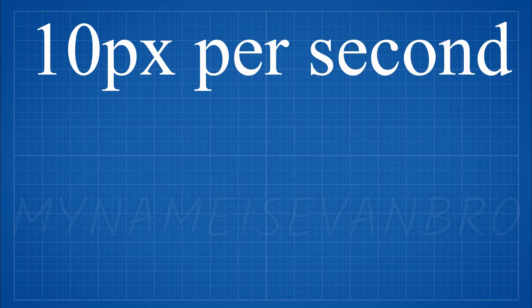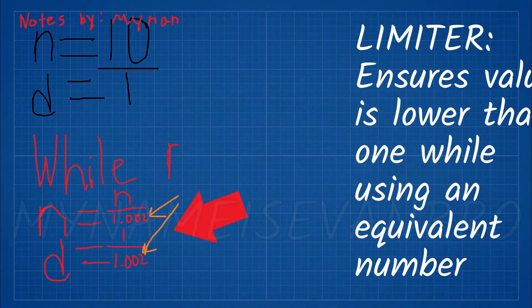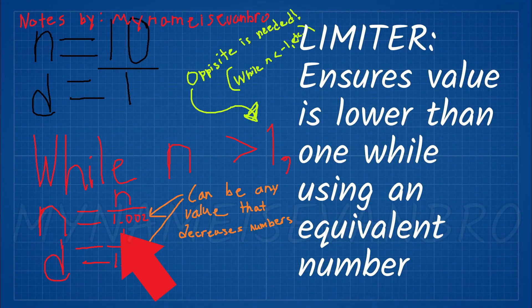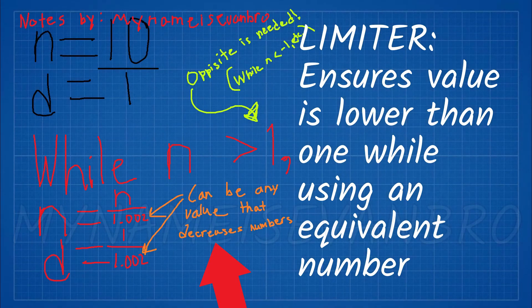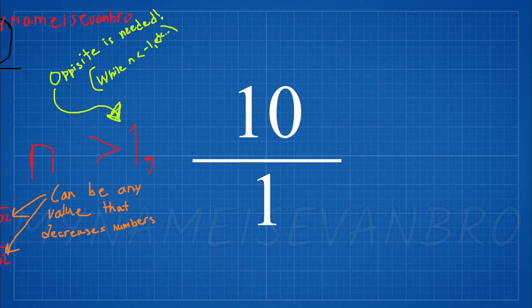To fix this I added a limiter. It divides both the 1 and the numerator by a small value that decreases both values. It continues to divide until the value is below a certain threshold.